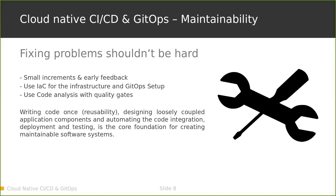The last aspect is maintainability. Fixing problems shouldn't be hard. We achieve this by deploying small increments, getting early feedback, and using IaC — infrastructure as code — to spin up new environments automatically. If we can recreate our complete infrastructure and GitOps setup by just triggering an Ansible playbook, we have a big advantage over having to perform thousands of manual steps to get an environment up and running.